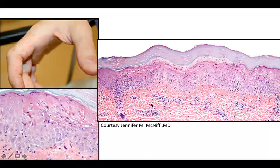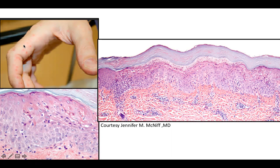Welcome back to DP60. Today we have a CPC of multiple vesicles on the hand of this adult. He also had lesions on his arms as well as other parts of his body.